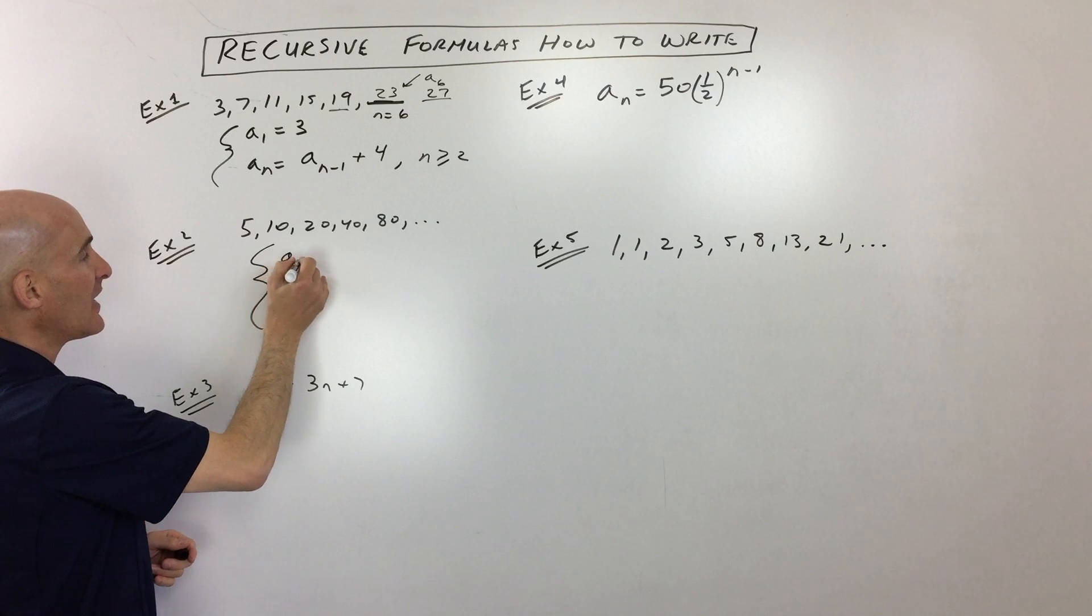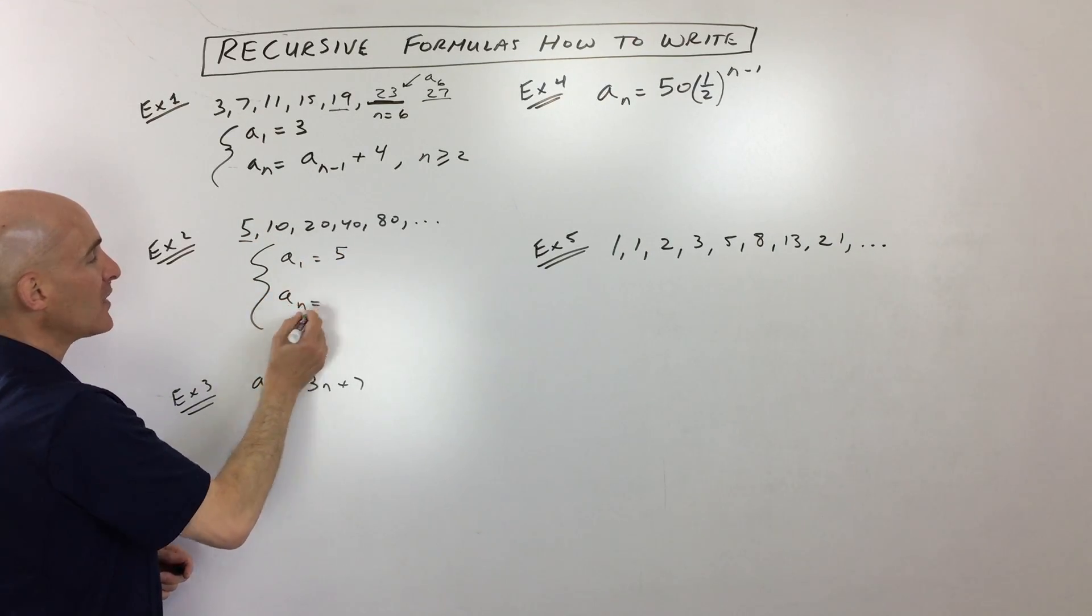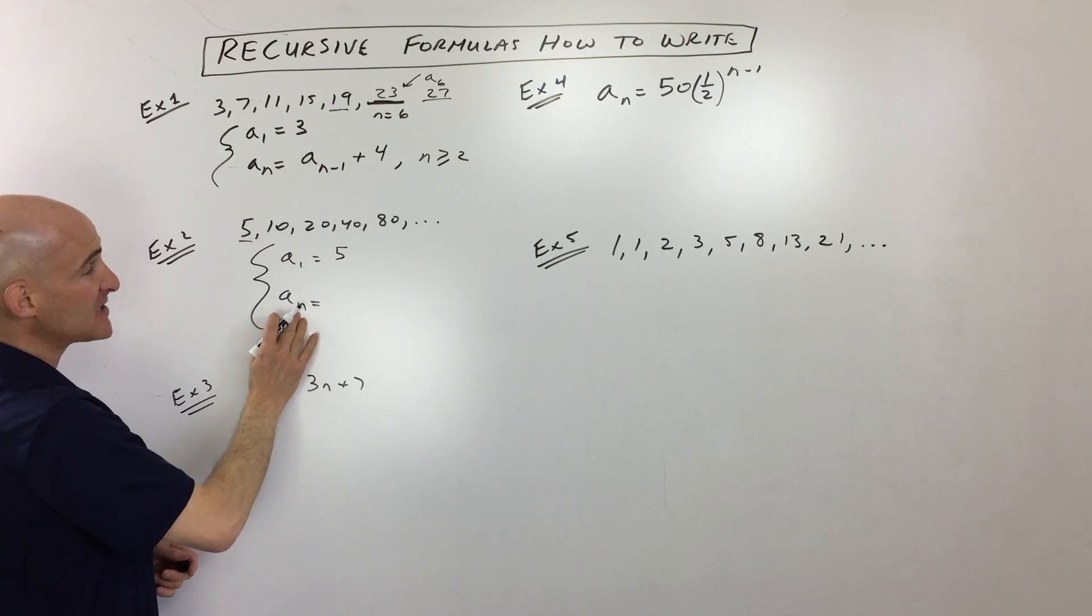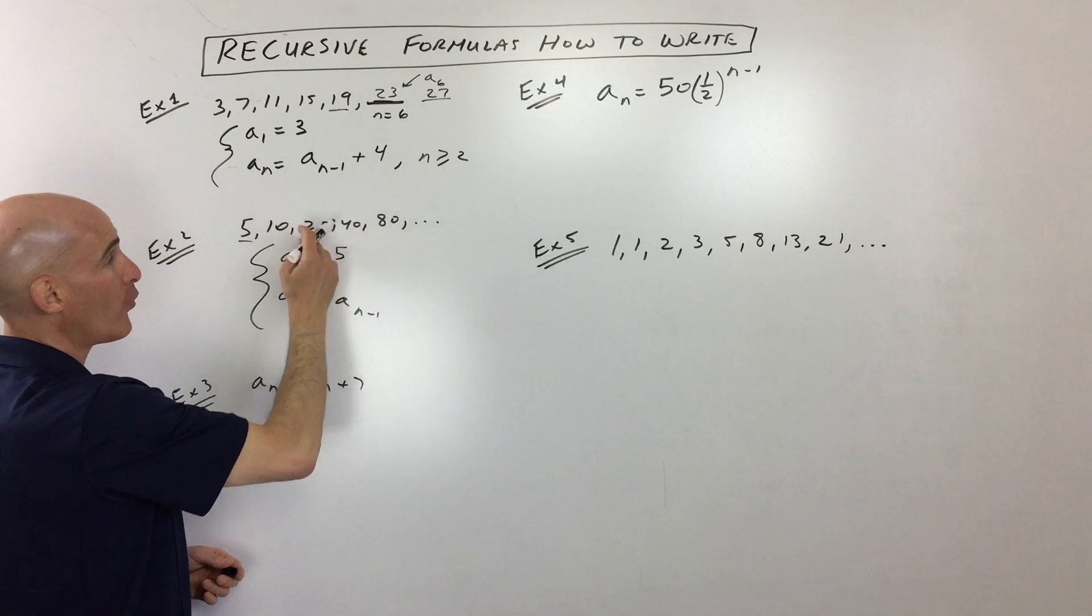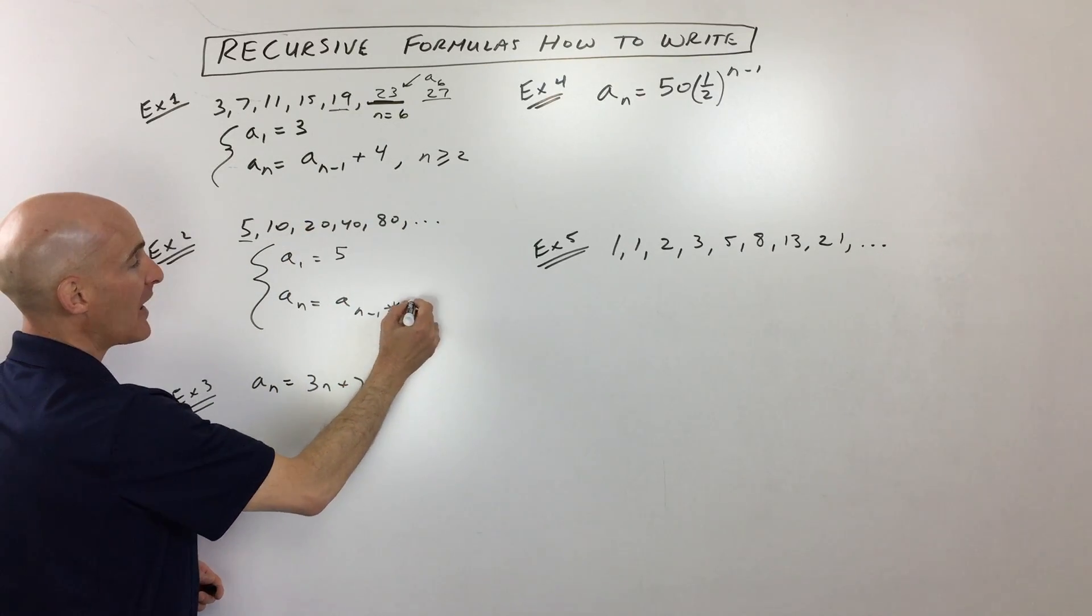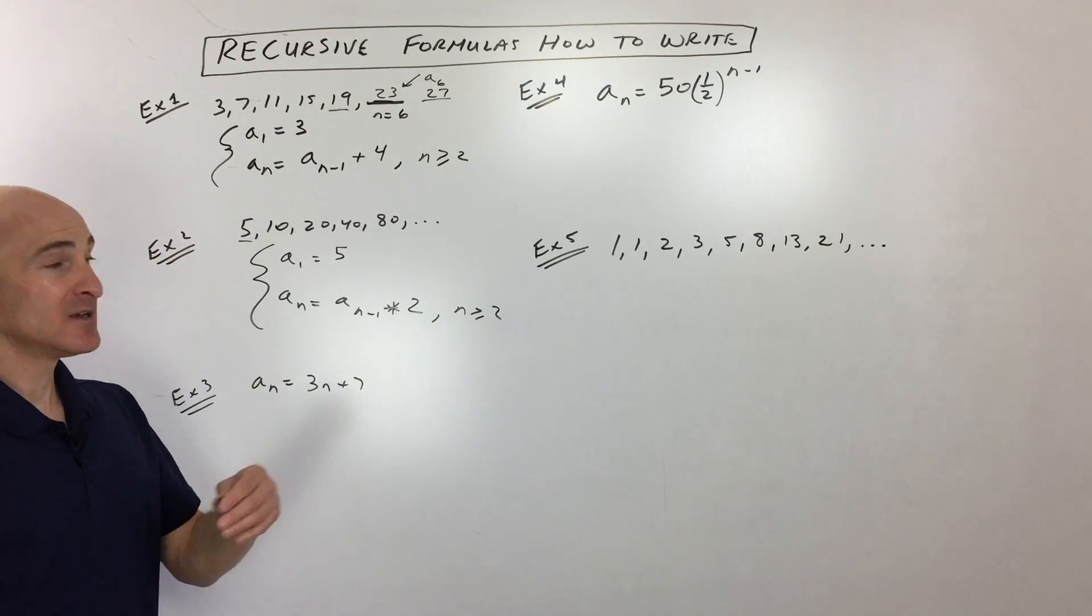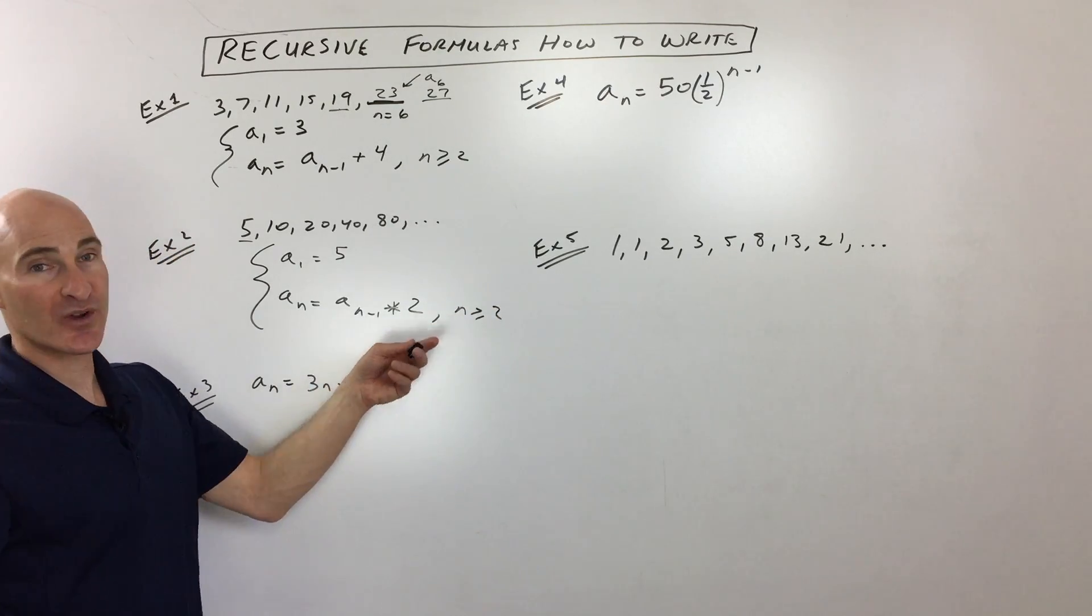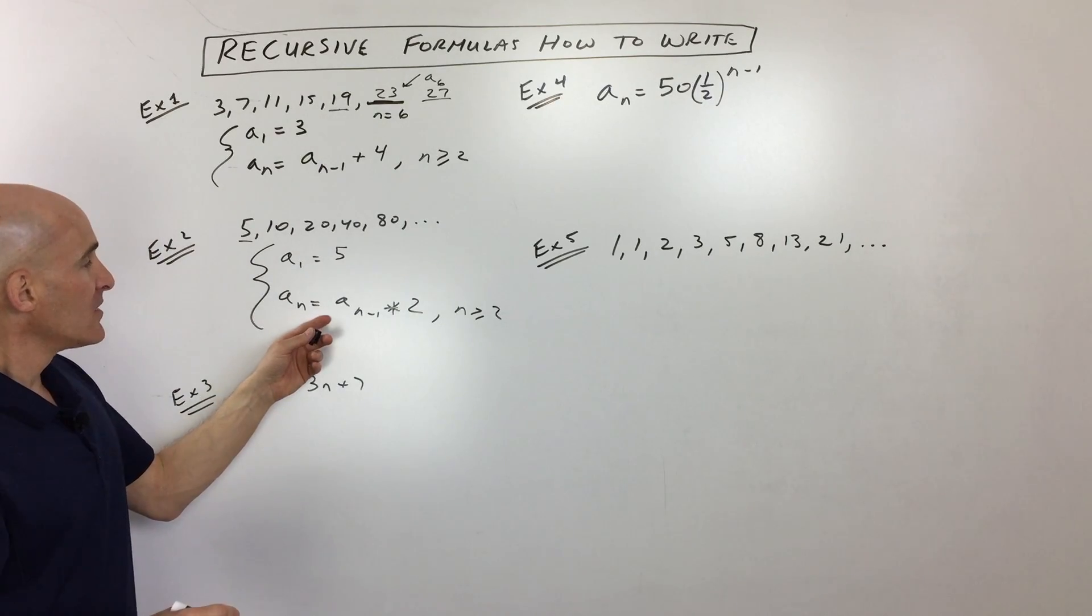The first term, a sub 1, is 5. And then if we want to write a formula to get to the value of the a sub nth term, you just take the a sub n minus 1th term, the one before, and then you multiply by 2. And that's for when n is greater than or equal to the second term. So this wouldn't work if you were at the first term, because we really don't know what the zeroth term is.